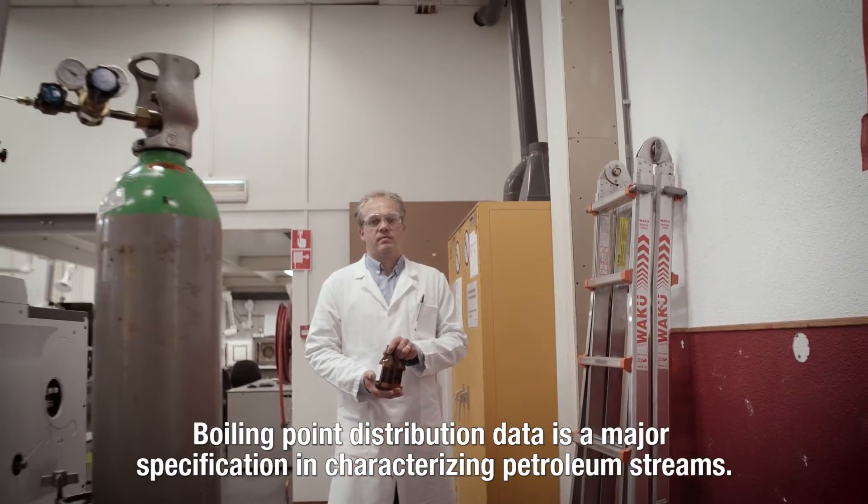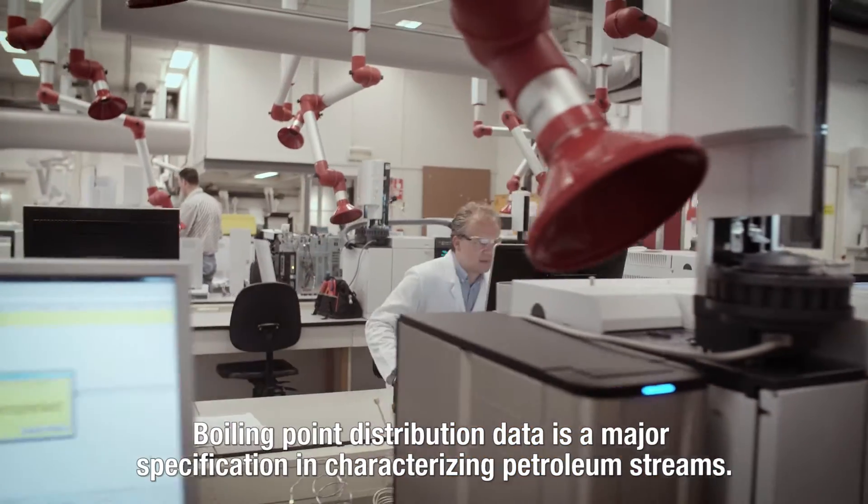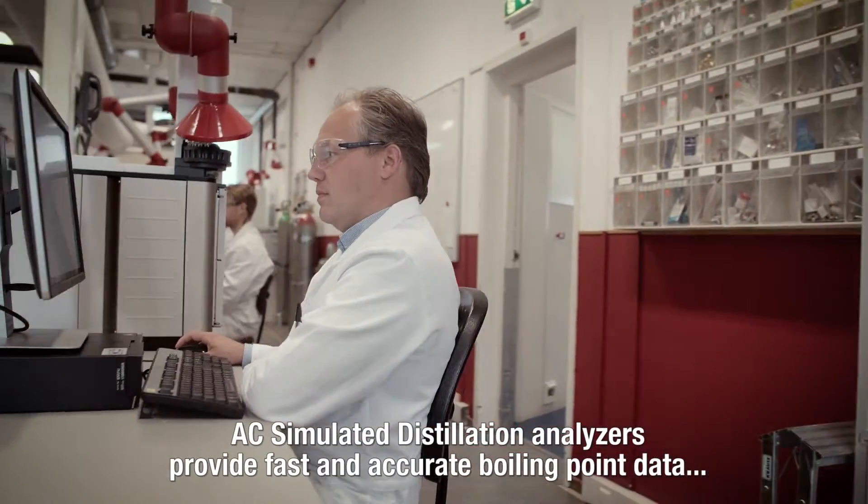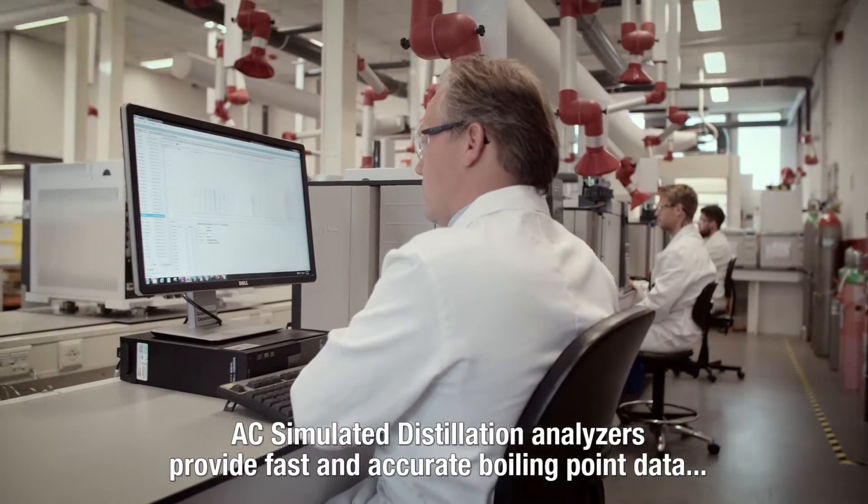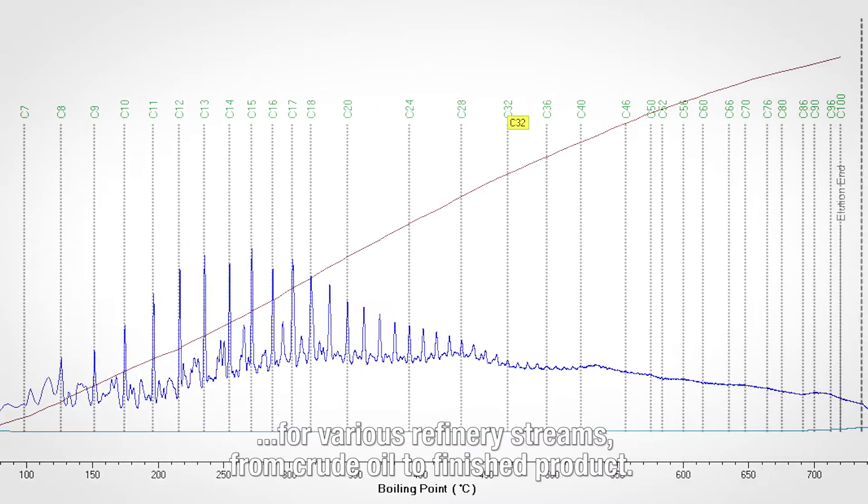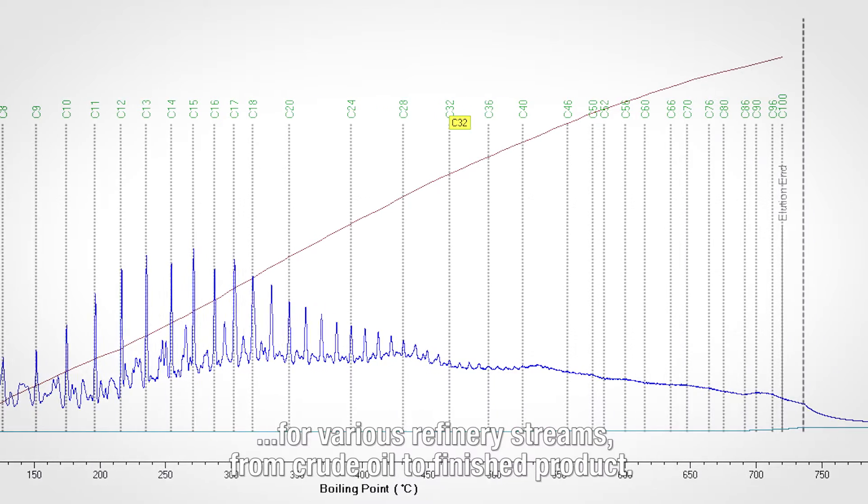Boiling point distribution data is a major specification in characterizing petroleum streams. AC simulated distillation analyzers provide fast and accurate boiling point data for various refinery streams, from crude oil to finished product.